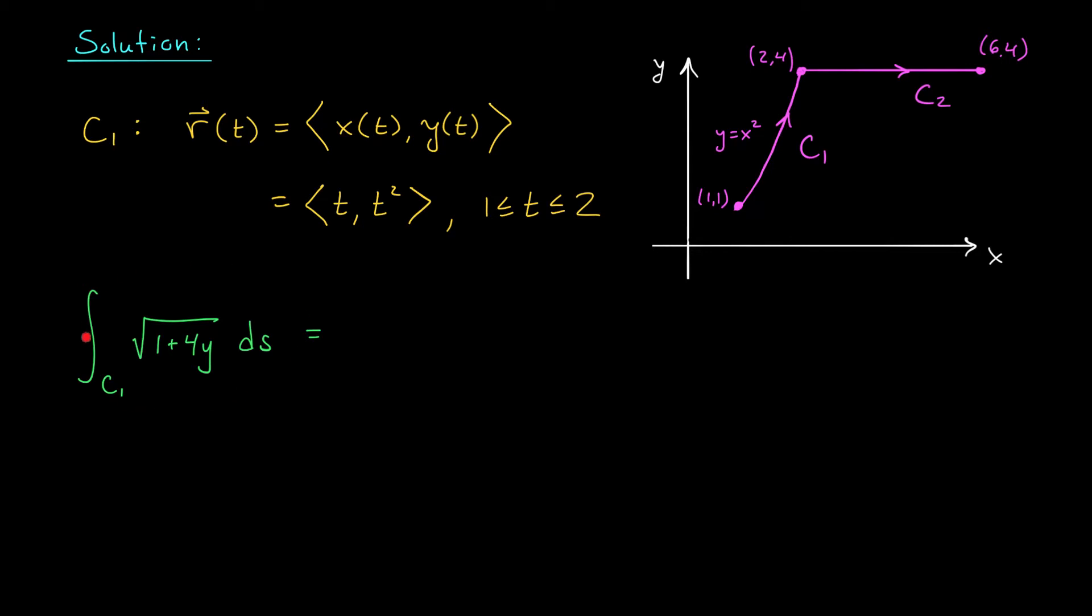To compute our line integral, we replace the bounds with the bounds on t, 1 to 2. We replace our variables x and y using the descriptions in r of t. So here we're going to have the square root of 1 plus 4t squared. And lastly, we replace ds with that big ugly square root, the square root of dx over dt squared plus dy over dt squared dt. Now, if you don't want to write this big ugly thing out every single time, you can write it more compactly as the norm of the vector r prime t. After all, we're taking the derivatives of these entries, squaring them, adding up, and taking the square root.